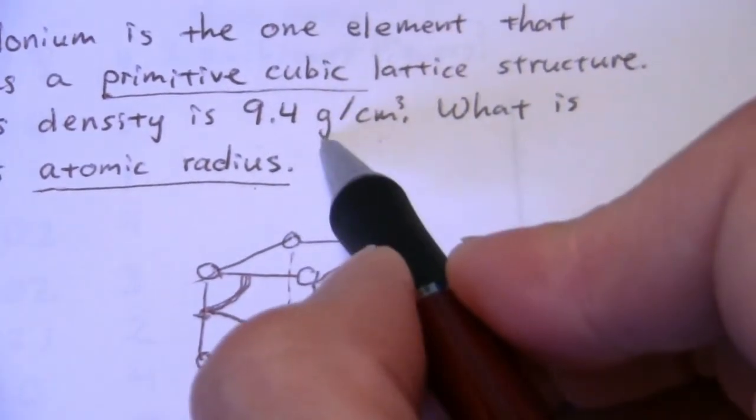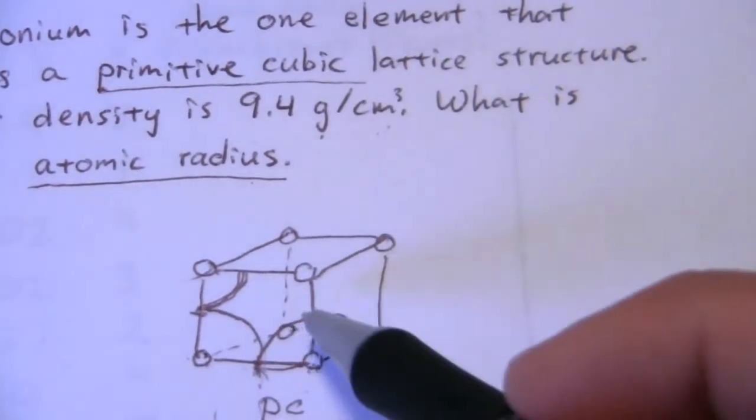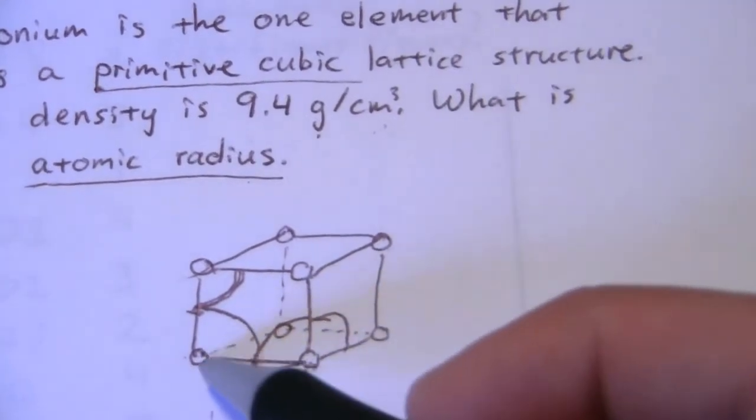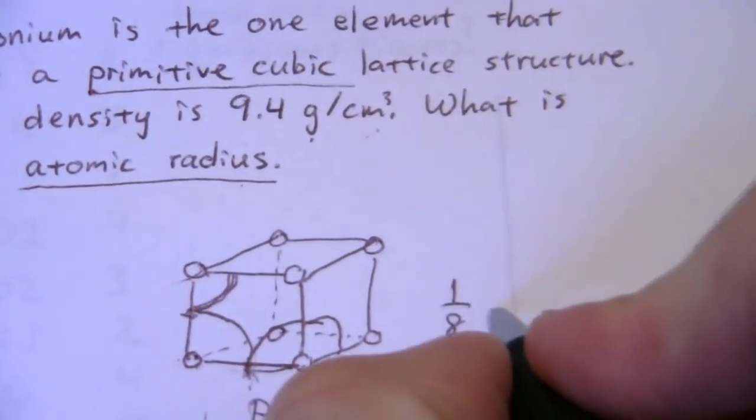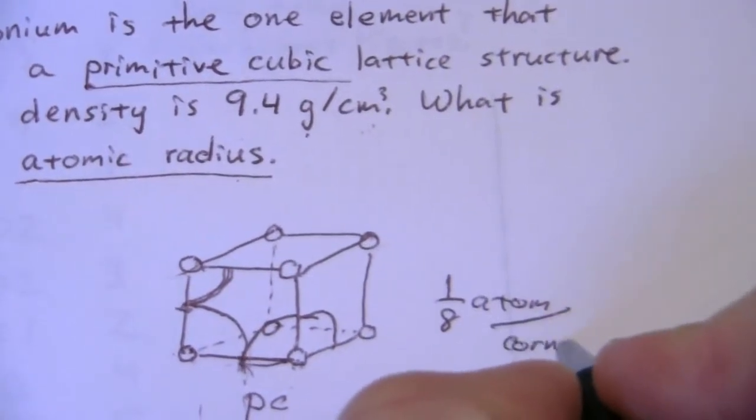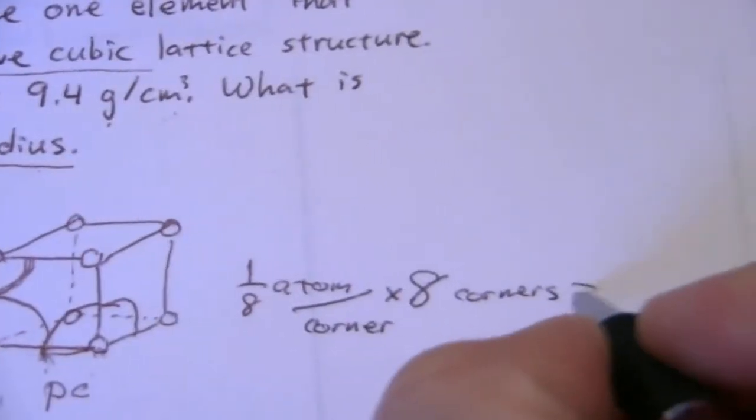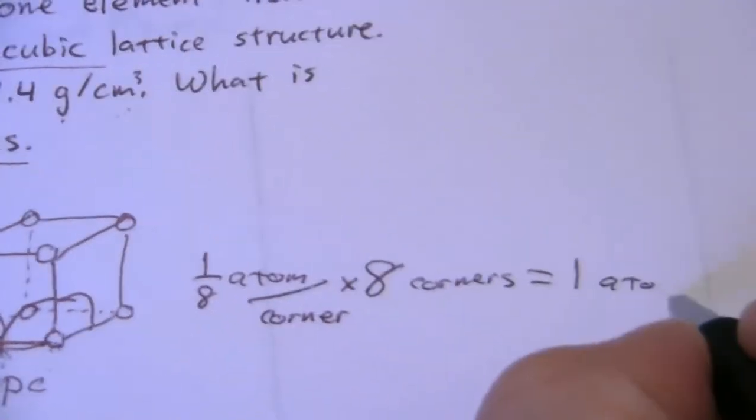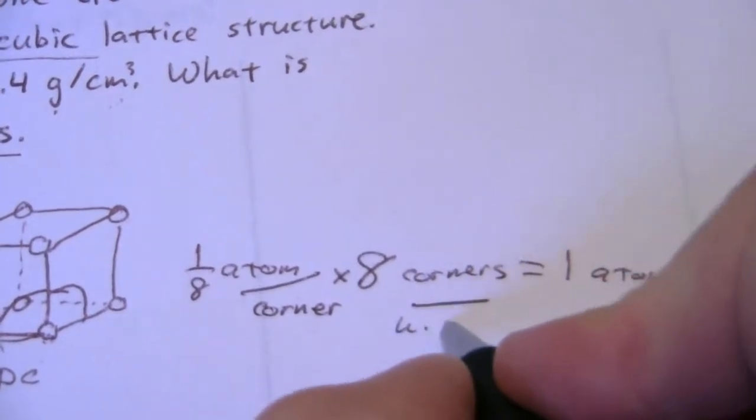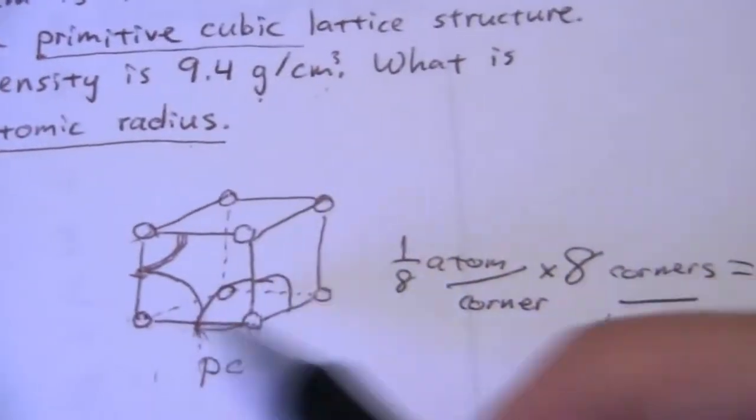So you'll notice this is mass per unit volume. Here's our unit of volume, and we know there's how many polonium atoms inside this unit cell? Well, there's one-eighth of an atom in each corner. One-eighth of an atom per corner. And there are eight corners. So that gives us one atom. I could say eight corners per unit cell. So there's one atom per unit cell. So one atom in here.